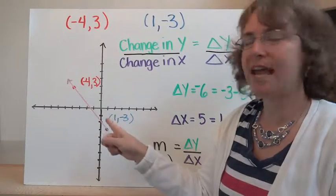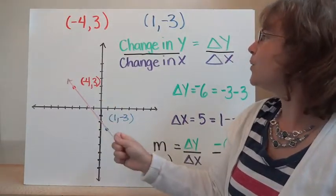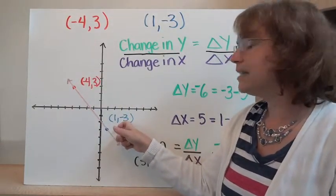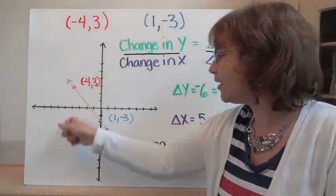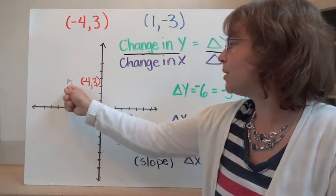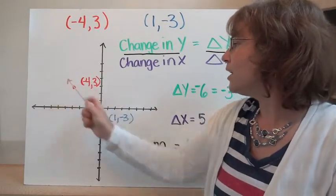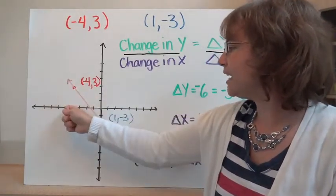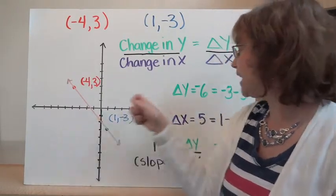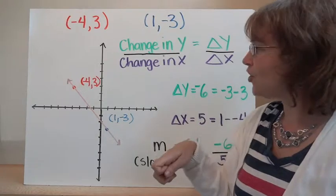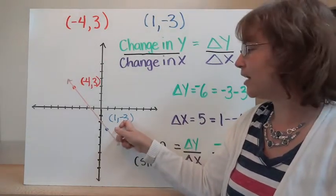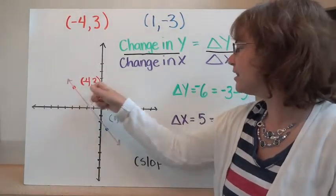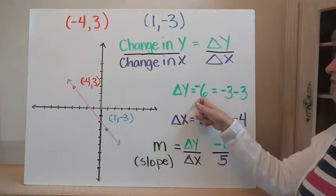We've got it graphed here, so we can look at the change in y. Our y coordinate here is three, and we've gone down to negative three — we've gone down this time instead of up, so our change is going to be negative for y. We went three down and then an additional three, so that change is negative six. We can also calculate that by taking our endpoint, negative three, and subtracting where we started: negative three minus three, which is also negative six.